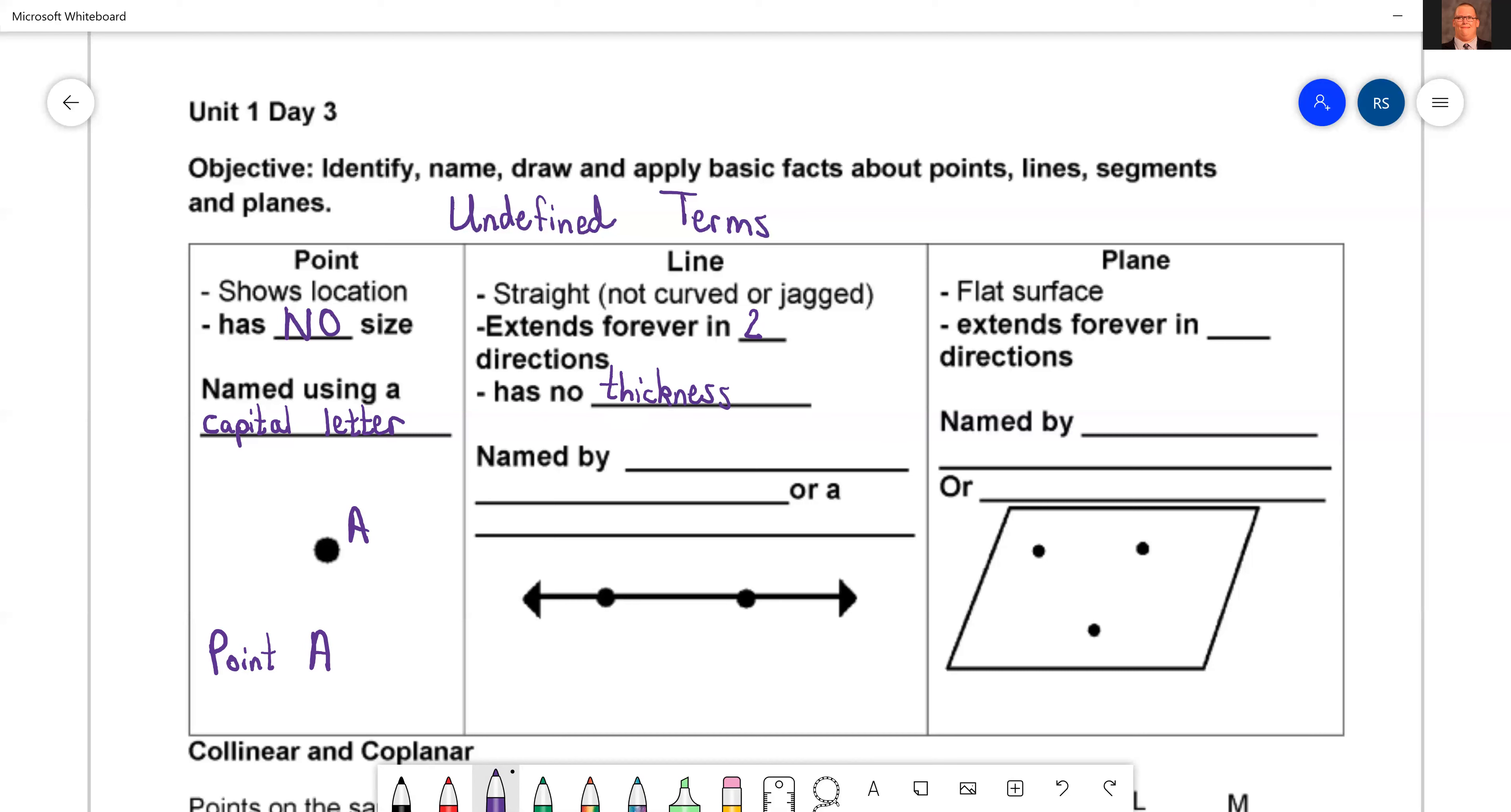But it has no thickness. Now we've got to name this line. To name a line properly, we have to use any two points on the line itself, or we could also use a lowercase cursive letter. So what does that look like? Let's say these two points here are B and C, and this line we're going to use the cursive letter L.